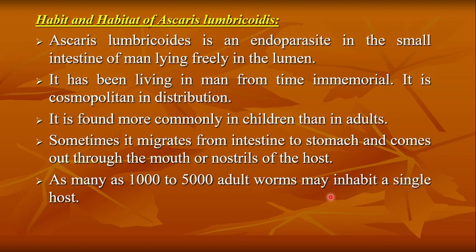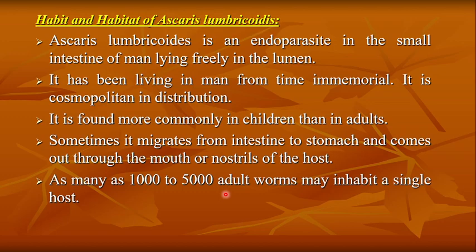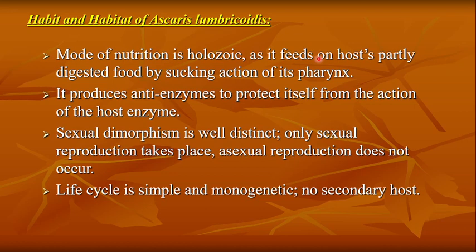Ascaris lumbricoides is an endoparasite in the small intestine of man, lying freely in the lumen. It is cosmopolitan in distribution, found more commonly in children than adults. Sometimes it migrates from the intestine to the stomach and exits through the mouth or nostrils. As many as 1,000 to 5,000 adult worms may inhabit a single host. Its mode of nutrition is holozoic, feeding on the host's partly digested food by the sucking action of its pharynx.